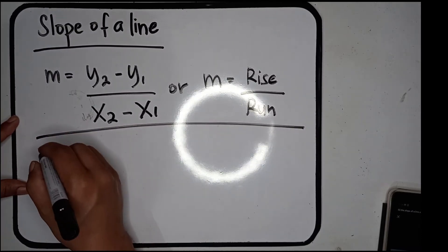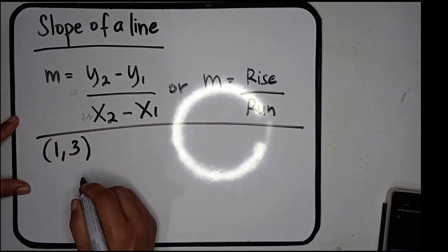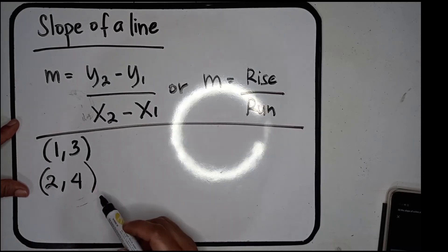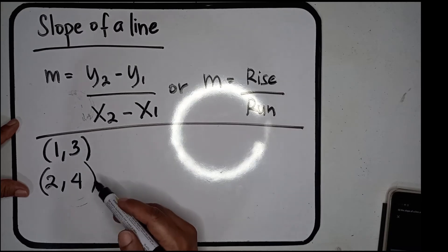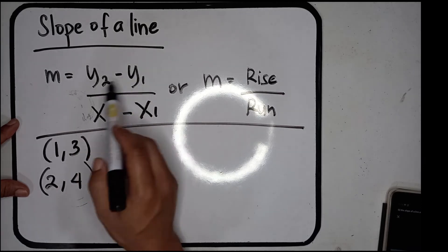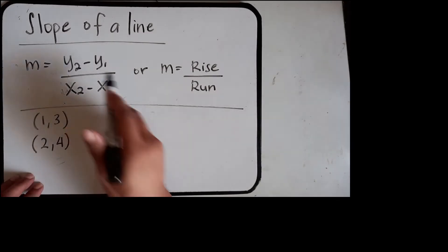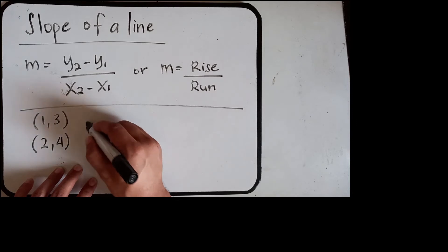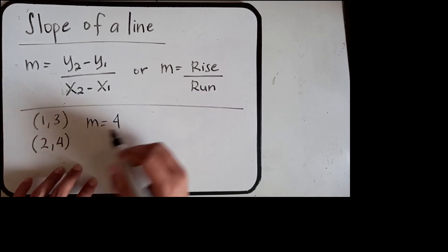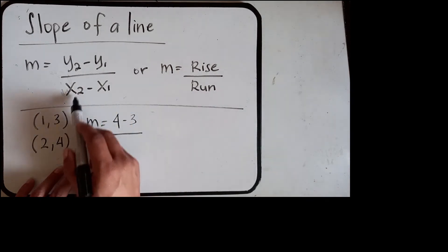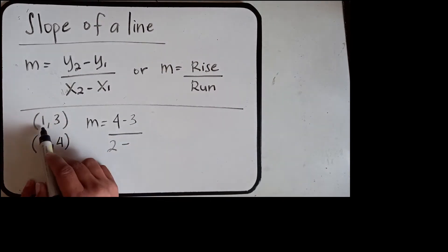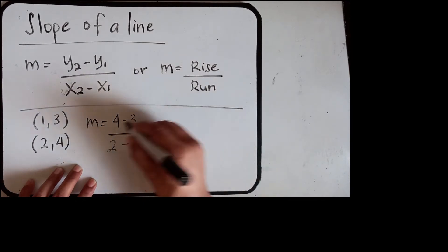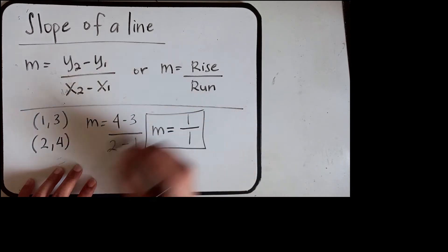Let's have an example. We have the points (1, 3) and (2, 4). To get the slope, we substitute into the formula: m equals y-sub-2 minus y-sub-1 over x-sub-2 minus x-sub-1, so m equals 4 minus 3 over 2 minus 1, which gives us m equals 1 over 1, so the slope is 1.